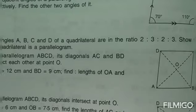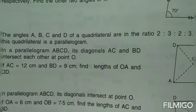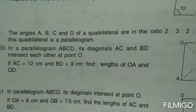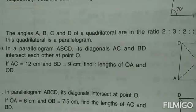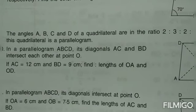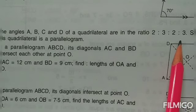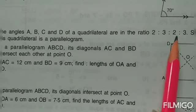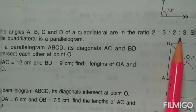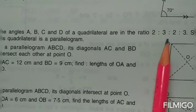Question number 9: the angles ABCD of a quadrilateral are in the ratio 2:3:2:3. We have to find all the angles. It is straightforward — use a variable and calculate all four angles.